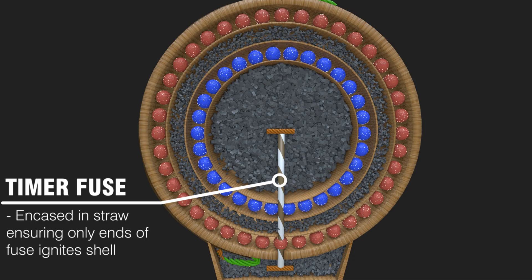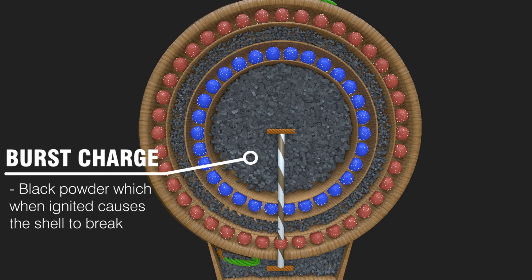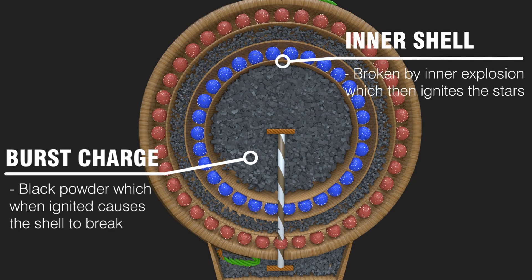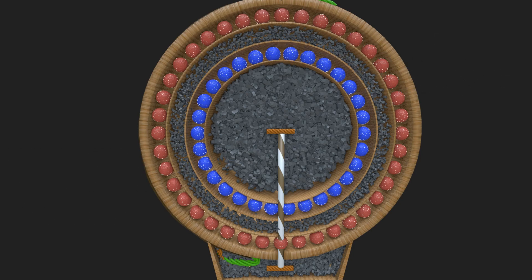The shell continues traveling until the lit straw fuse reaches the center of the shell. The burst charge is then ignited and rapidly burns, creating an overpressure within the shell. This pressure causes the shell to break, providing a familiar explosion and igniting the spherical stars.